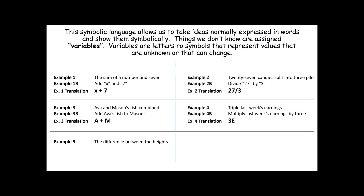Consider this: the difference between the heights. The word difference hopefully reminds you of subtraction. So this is saying subtract the two heights. If I'm subtracting two heights, I don't know what those heights are — they could be the same or very different. There are several ways to express that. Some people say X for the first height and Y for the second height and subtract those. Others prefer H sub 1 minus H sub 2, which indicates those are two different variables — not the same height. Or some people use a capital H and lowercase h: the larger height take away the smaller height. Any of those are acceptable ways to represent this relationship.